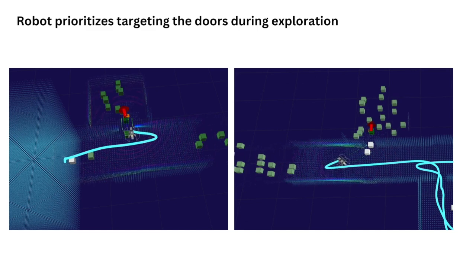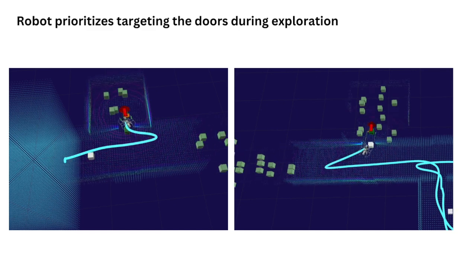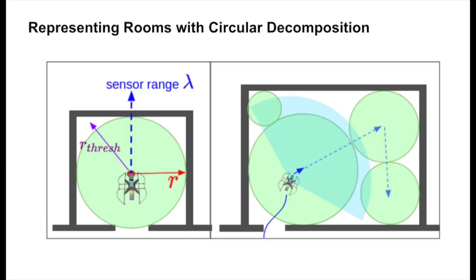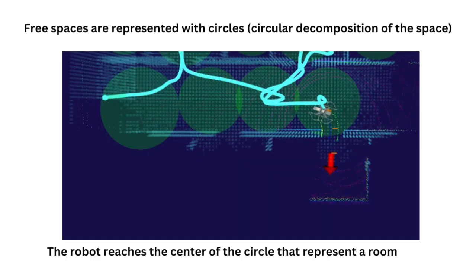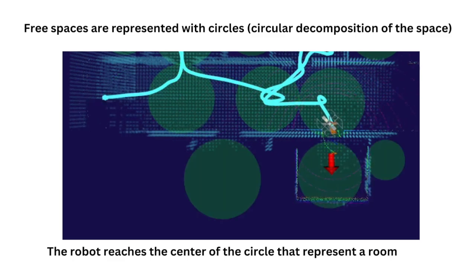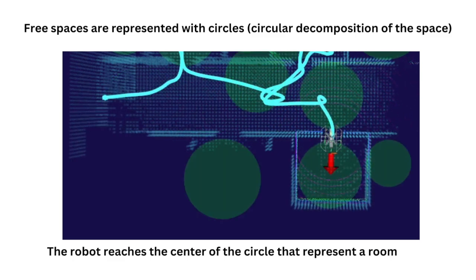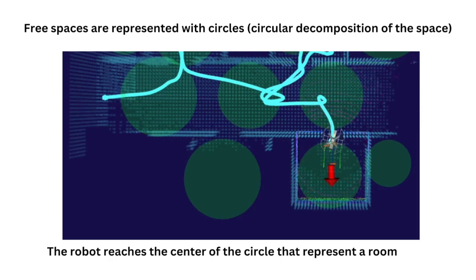Using the detected cues as goal points, robots can prioritize targeting doors. In this work, we represent each room with a circle or a set of circles. We utilize the distance transform map, setting the local maxima and distance to the wall as the center and radius of circles. Free space is represented by our circular decompositions. When a robot enters through a door, we make the robot reach the center of the circle to observe the surrounding and gain information about the rooms.